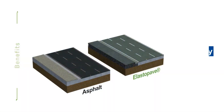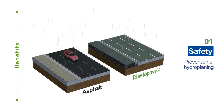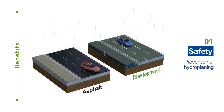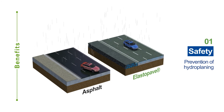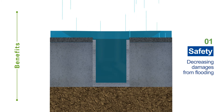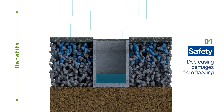The most crucial change is road safety. In summer, existing asphalt road is slippery due to the hydroplaning phenomenon. ElastoPave prevents hydroplaning by allowing rainwater to penetrate through the openings in the road. During heavy rain, ElastoPave can also help to decrease damages from flooding.